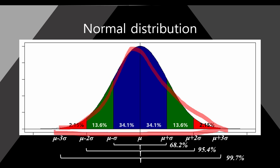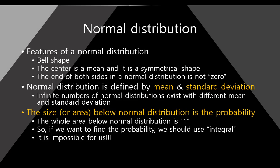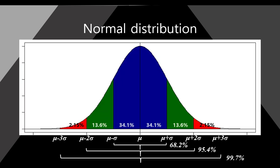What is the meaning of this normal distribution? Let me go through it one by one. The features of a normal distribution are: first, it is bell-shaped; the center is the mean and it has a symmetrical shape. And the ends of both sides in a normal distribution are not zero — the left side and right side, they are not zero.